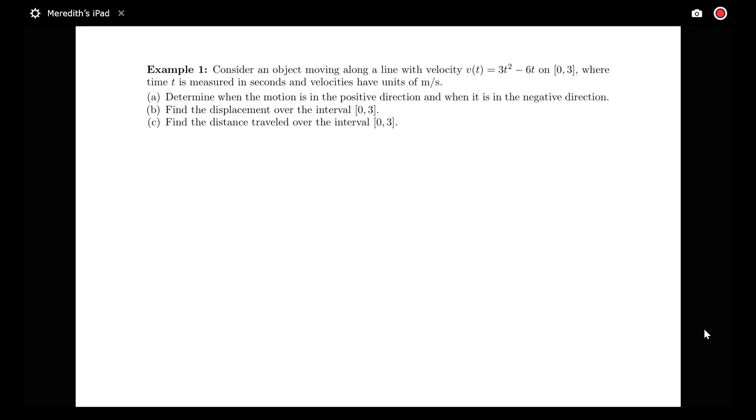Now let's look at an example involving velocity and computing displacement versus distance traveled. Consider an object moving along a line with velocity function v(t) = 3t² - 6t on the interval [0,3], where t is measured in seconds and velocity has units of meters per second.